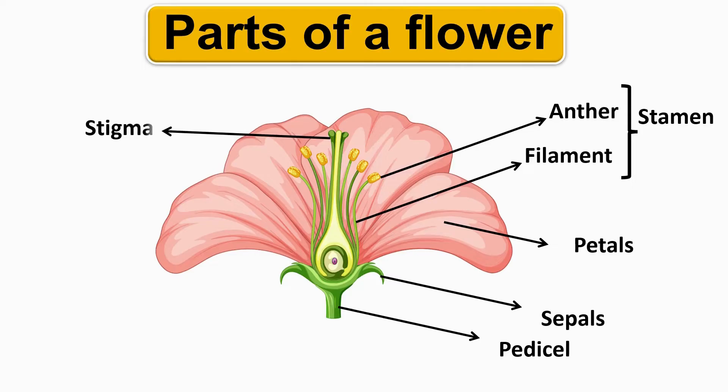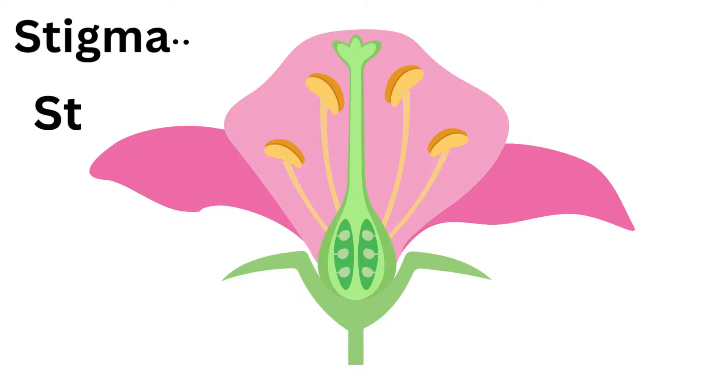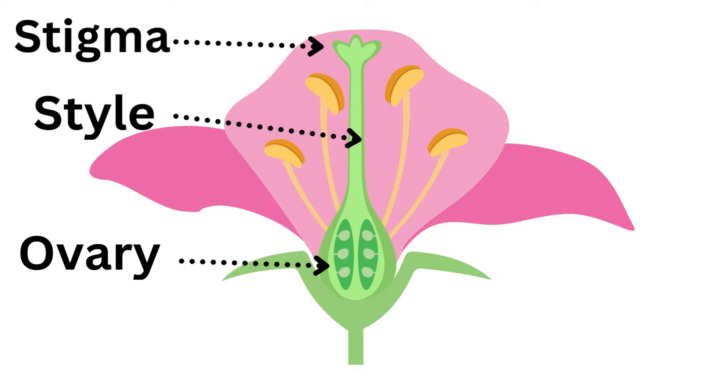The female part of the flower is called carpel or pistil and this consists of three parts: the stigma, a sticky landing for pollen; the style, where the pollen grain descends; and the ovary.